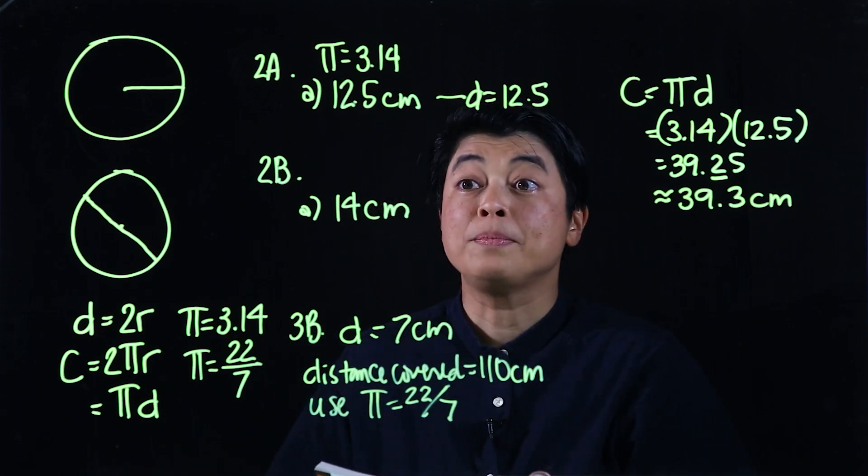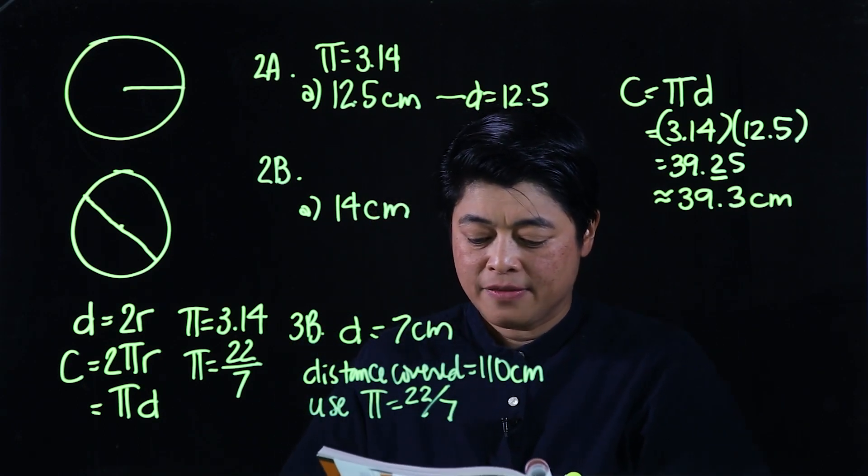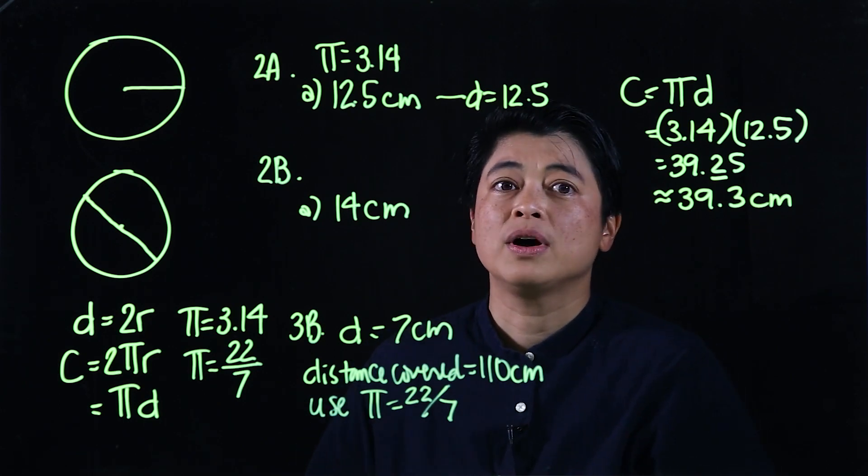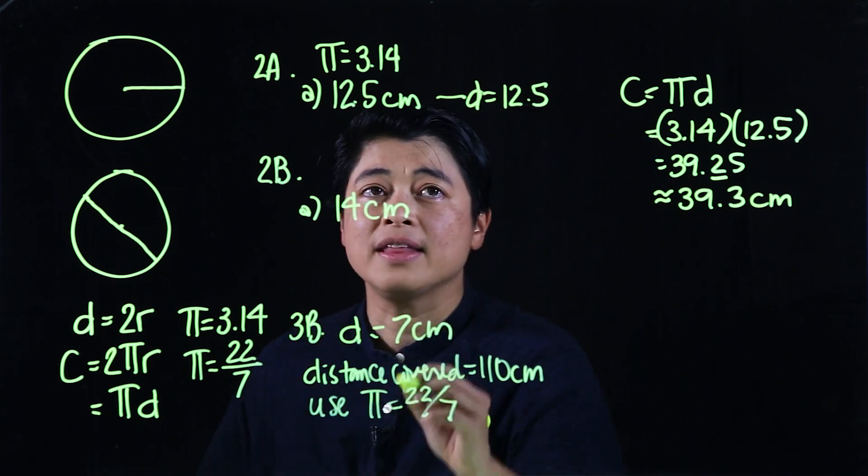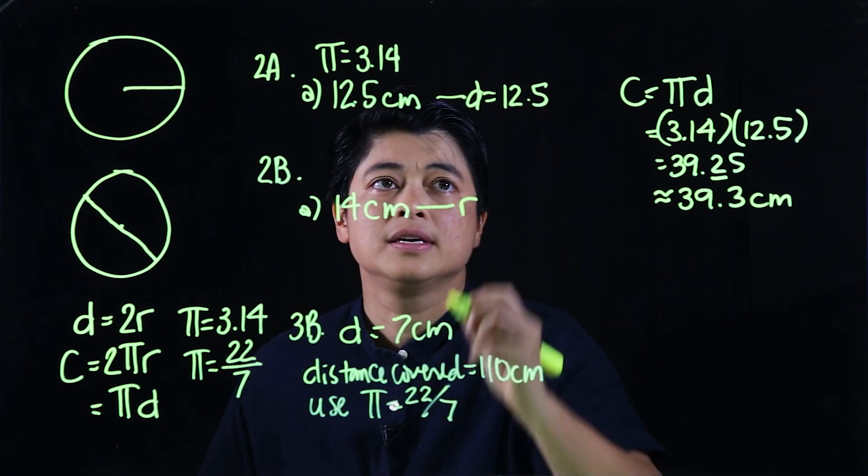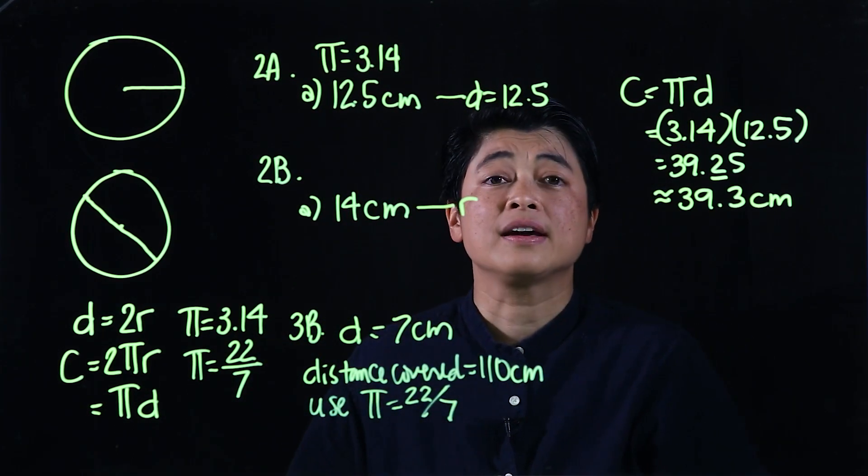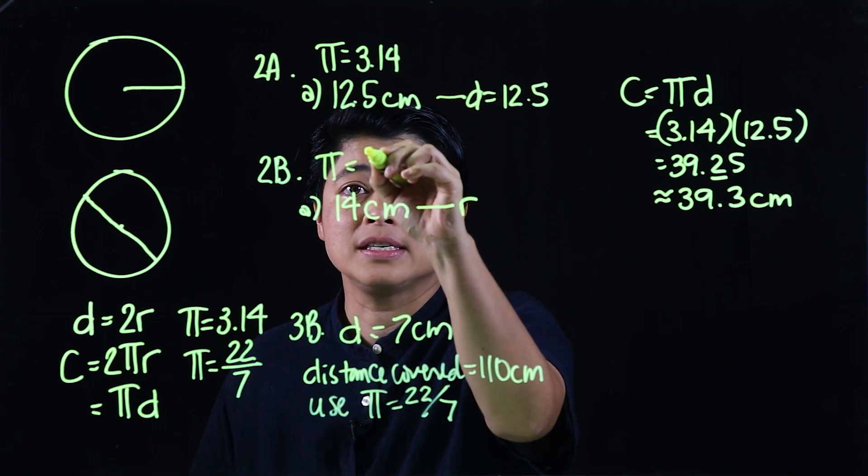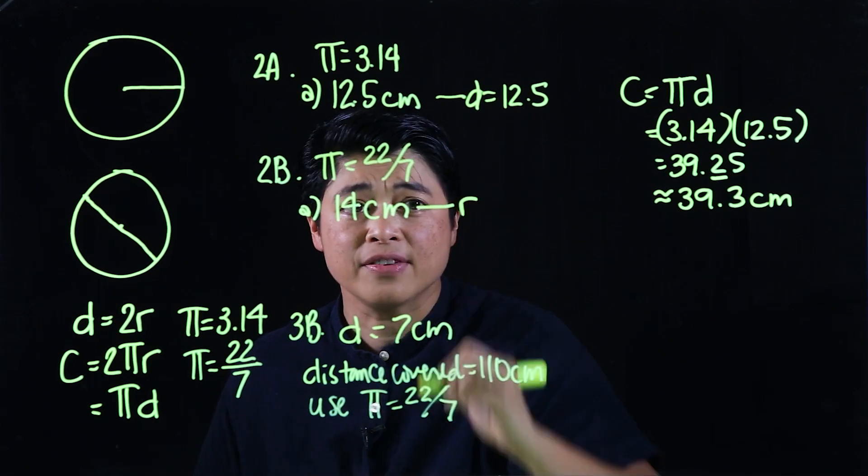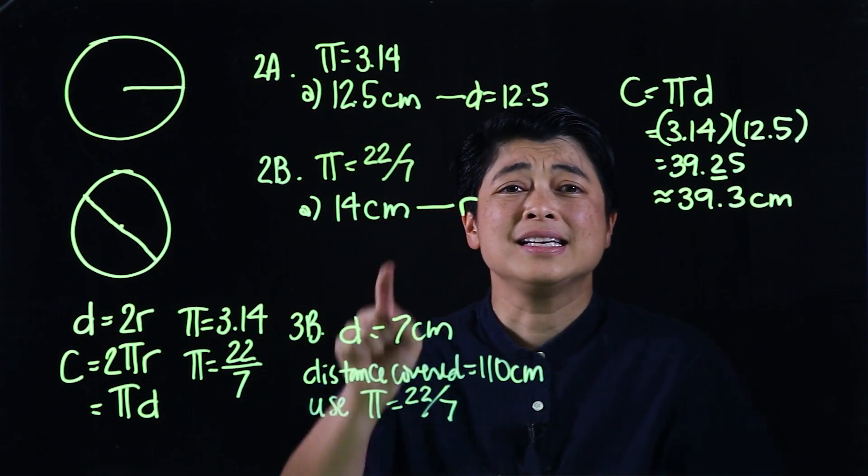In 2B, it says find the circumference of the circle. But this time around, we are given the radius, and they want us to use π=22/7.